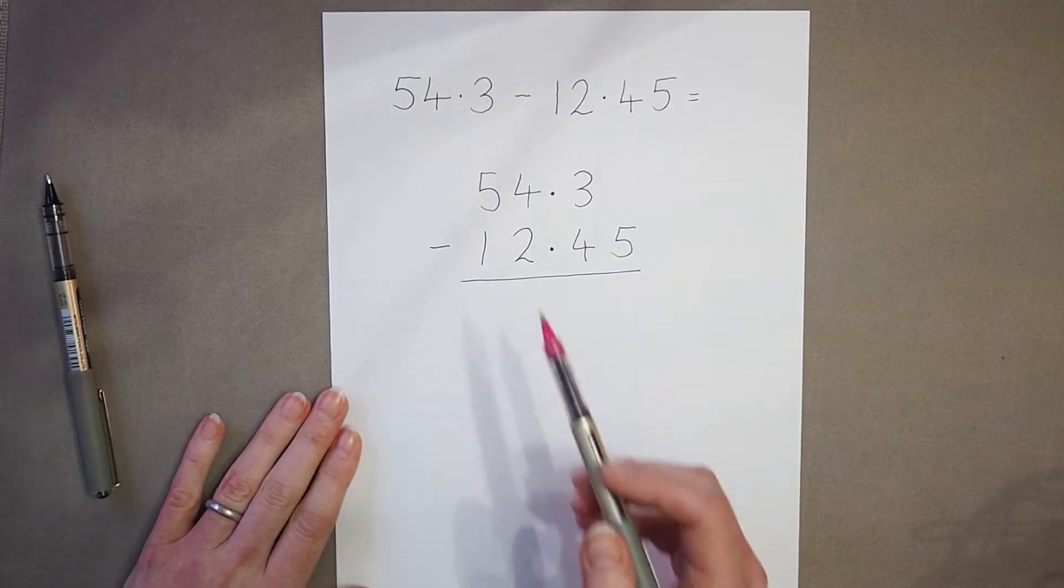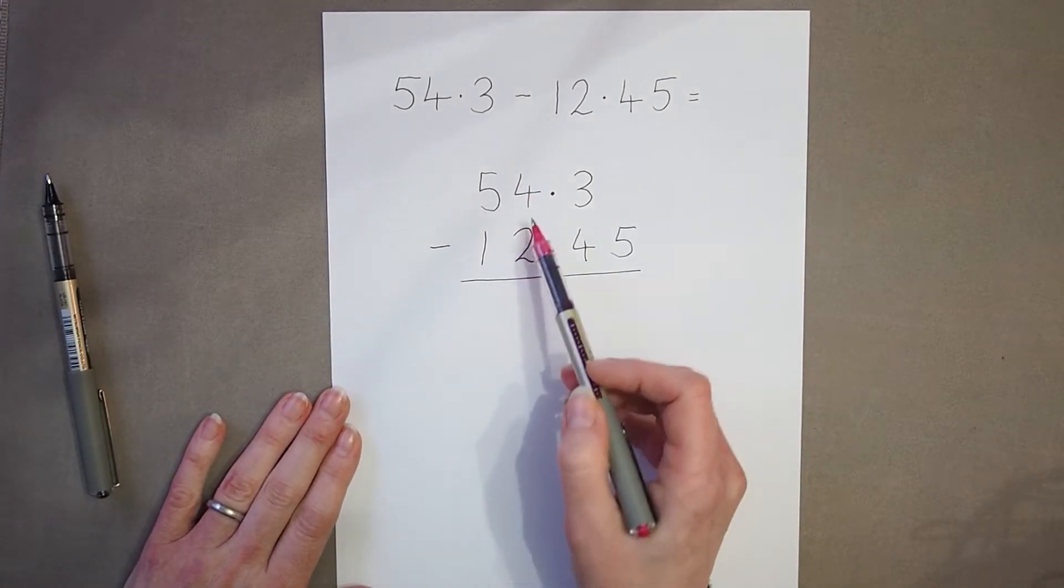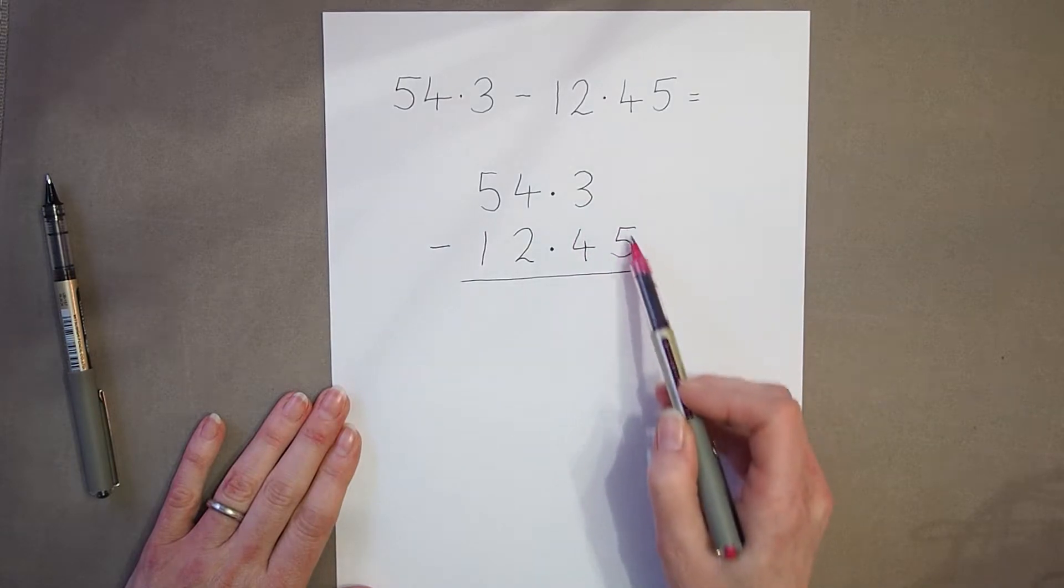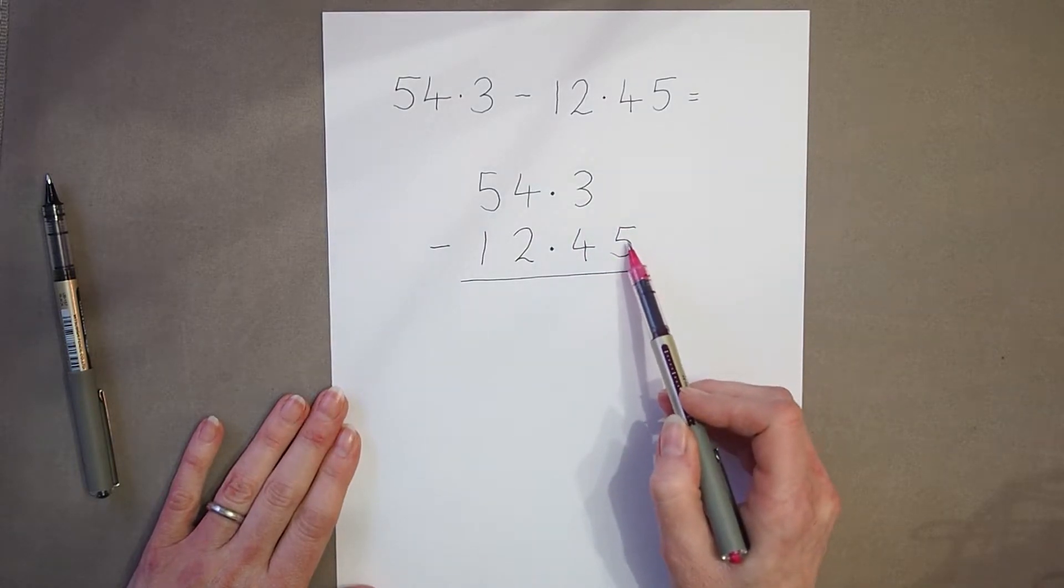So I'm going to start, normally I would start with the units column, but because I've got decimals I start as far right as I've got digits. So I'm in the hundredths column.